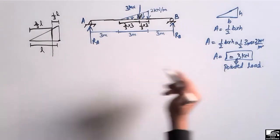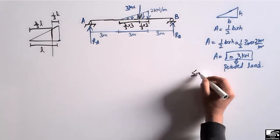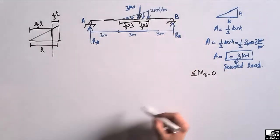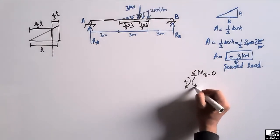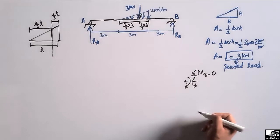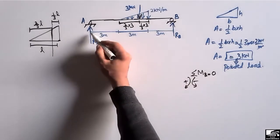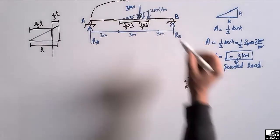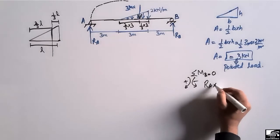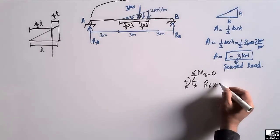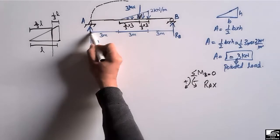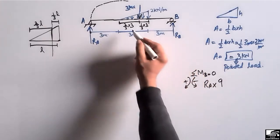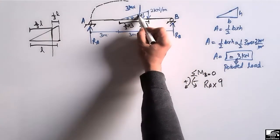To find out the reactions, let's consider the summation of moment at point B equal to zero. At this point we take the moment equal to zero. Let's consider that clockwise moment is taken as positive and anti-clockwise moment is taken as negative. Ra acts upward and creates a clockwise moment about point B, so it will be Ra multiplied by its moment arm, which is 3 plus 3 plus 3 equals 9.